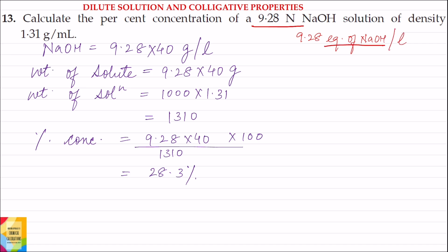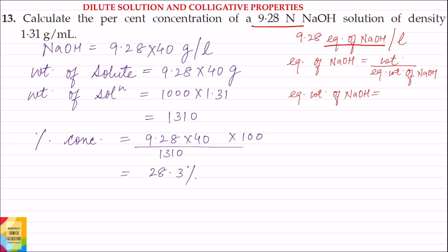Now what is the equivalence of NaOH? Equivalence of NaOH will be equal to weight divided by equivalent weight of NaOH. Ab equivalent weight of NaOH kitna hoota hai? Equivalent weight of NaOH is equal to its molecular weight, that is equivalent weight of NaOH is equal to 40.